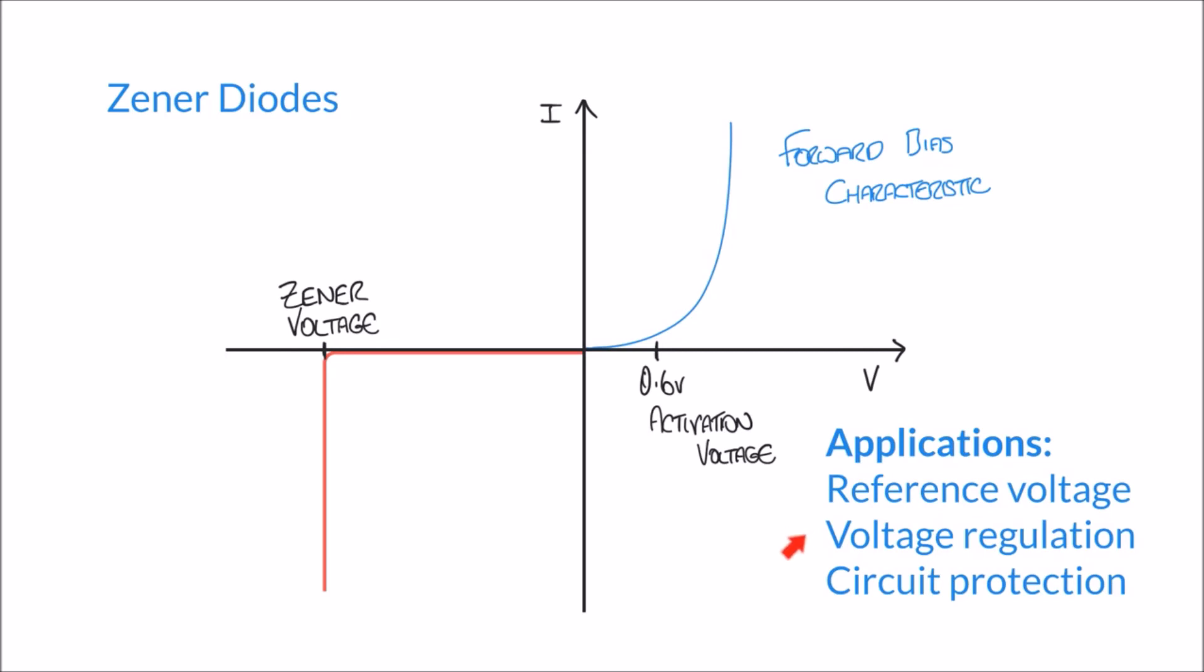We can use it for voltage regulation or circuit protection to limit the voltage that can be put across the diode and across the rest of the circuit. This protects the rest of the circuit from potentially high voltages. So we can use the Zener diode as a form of protection to limit the voltage.